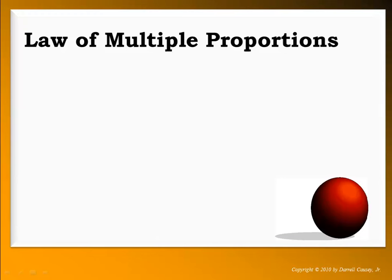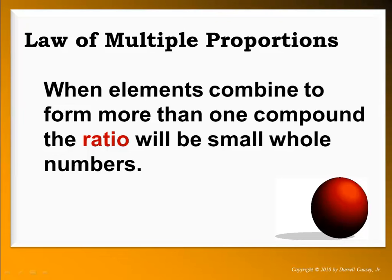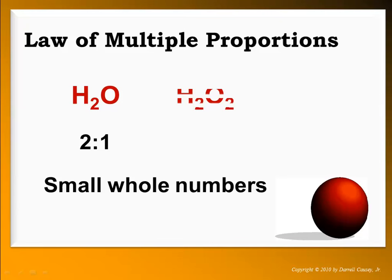The law of multiple proportions also influenced Dalton. It basically states that when two elements combine to make more than one compound, the ratio in those compounds will be small whole numbers. That's like hydrogen and oxygen — hydrogen and oxygen make water, and they also make hydrogen peroxide. Hydrogen peroxide is in a two-to-two ratio, and water is in a two-to-one ratio. But no matter what, it's small whole numbers.